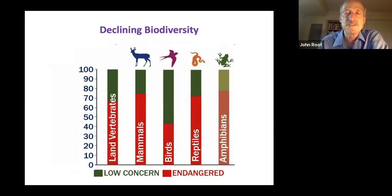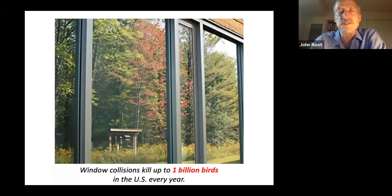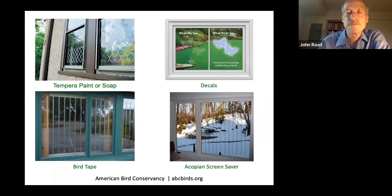It's not just the sheer numbers but also the diversity — the number of different species of all the different land vertebrates and invertebrates. This chart shows the vertebrates and how many endangered species there are in each group. When we think about bird conservation, the first step is do no harm. Window collisions kill up to 1 billion birds in the US every year. Birds see those windows as reflections of the outside and think they can fly in that direction, but of course they can't.